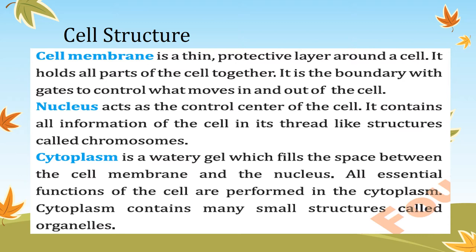The cell membrane is a similar feature present in both plant and animal cells. It is a protective layer that surrounds the cell and holds all parts of the cell together — it acts as a boundary wall. It allows some substances to move inside the cell and stops others from moving outside, so you can say it acts as a gate.